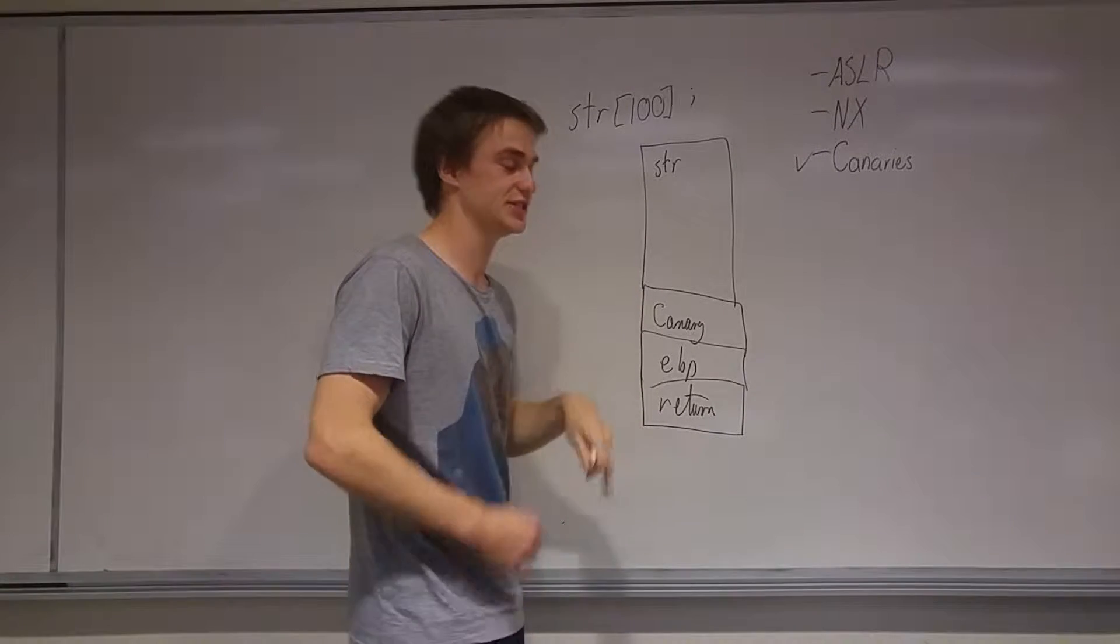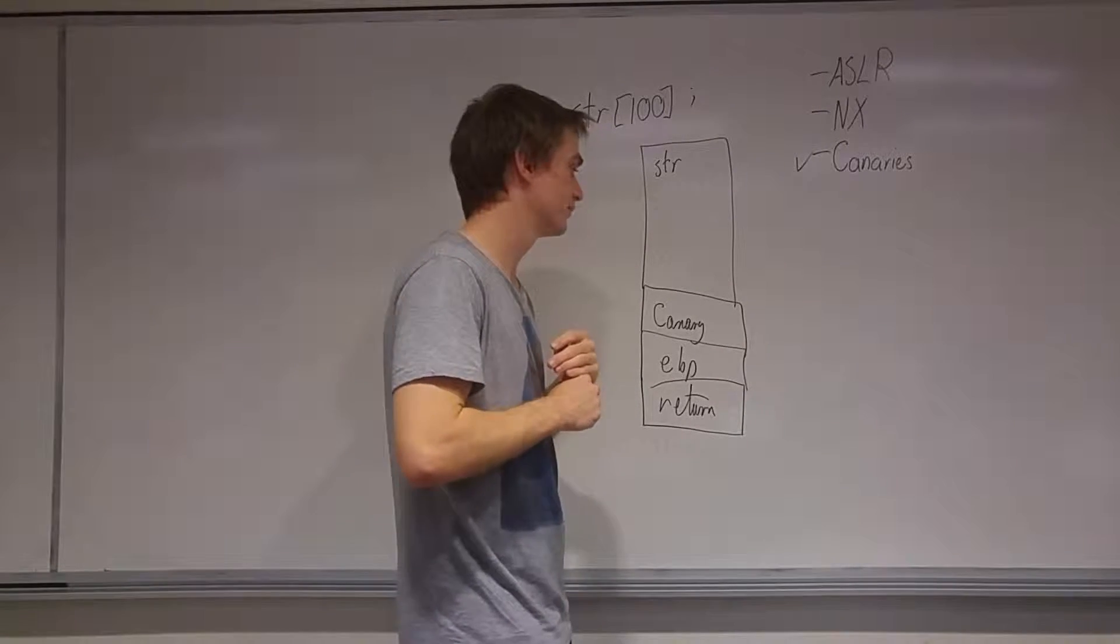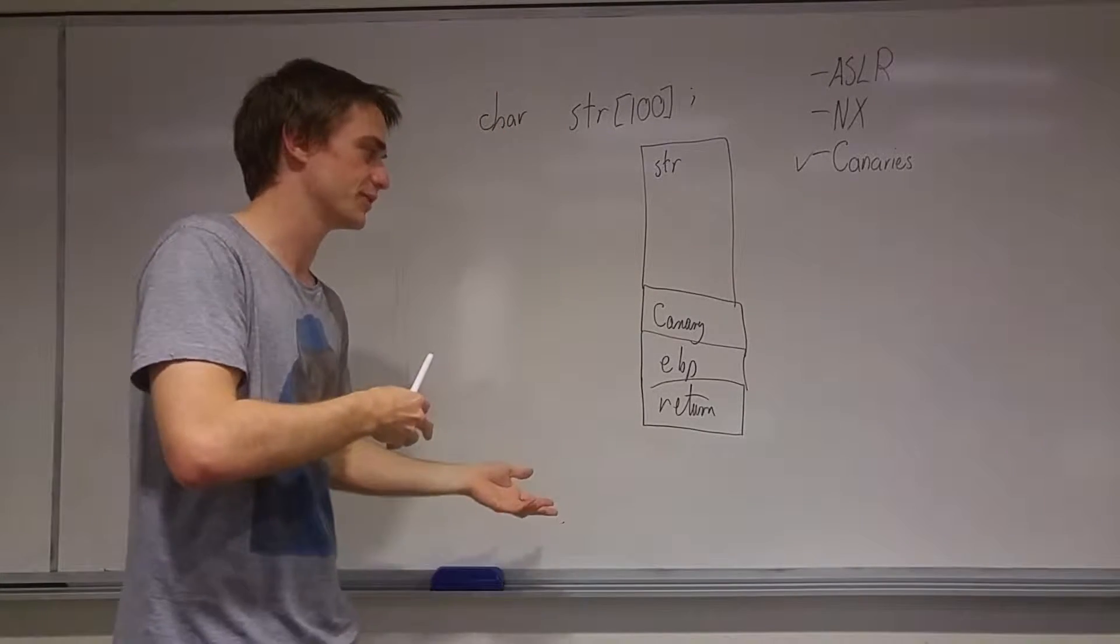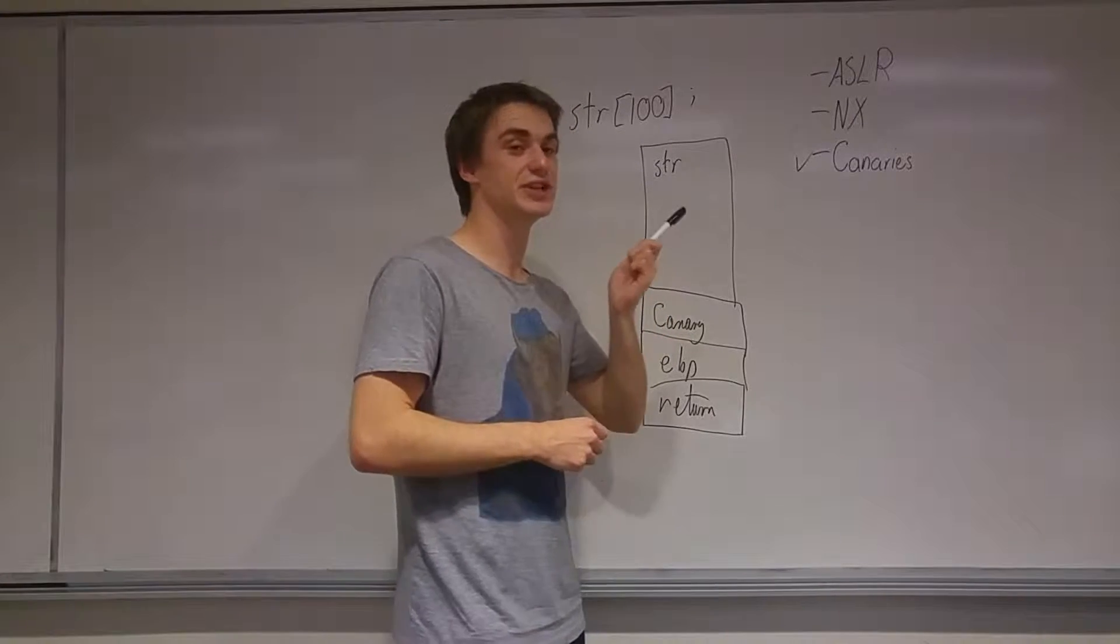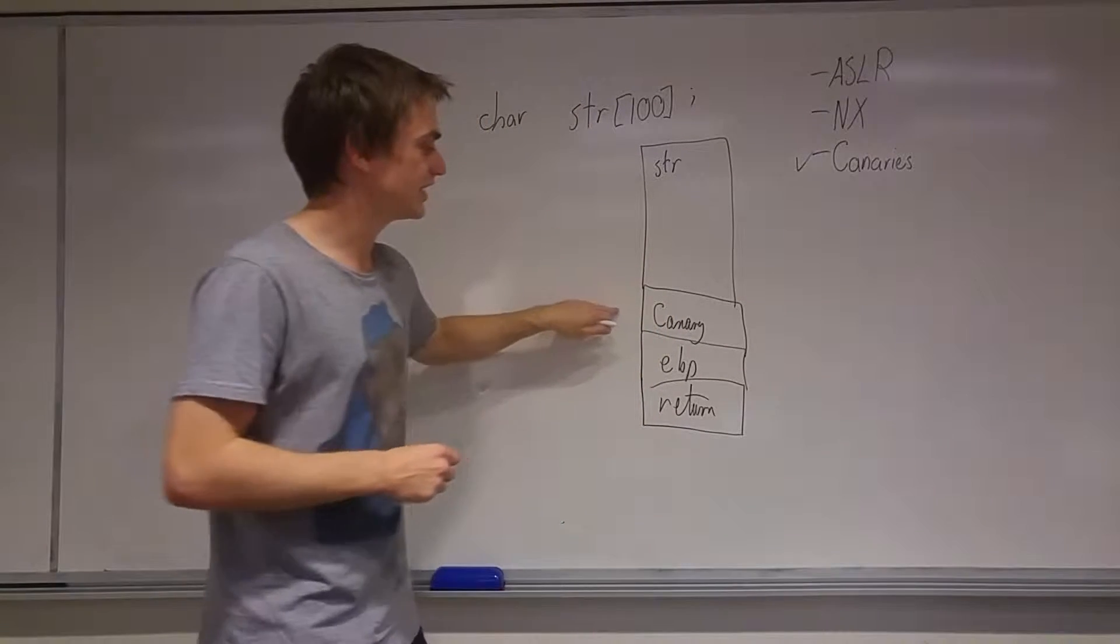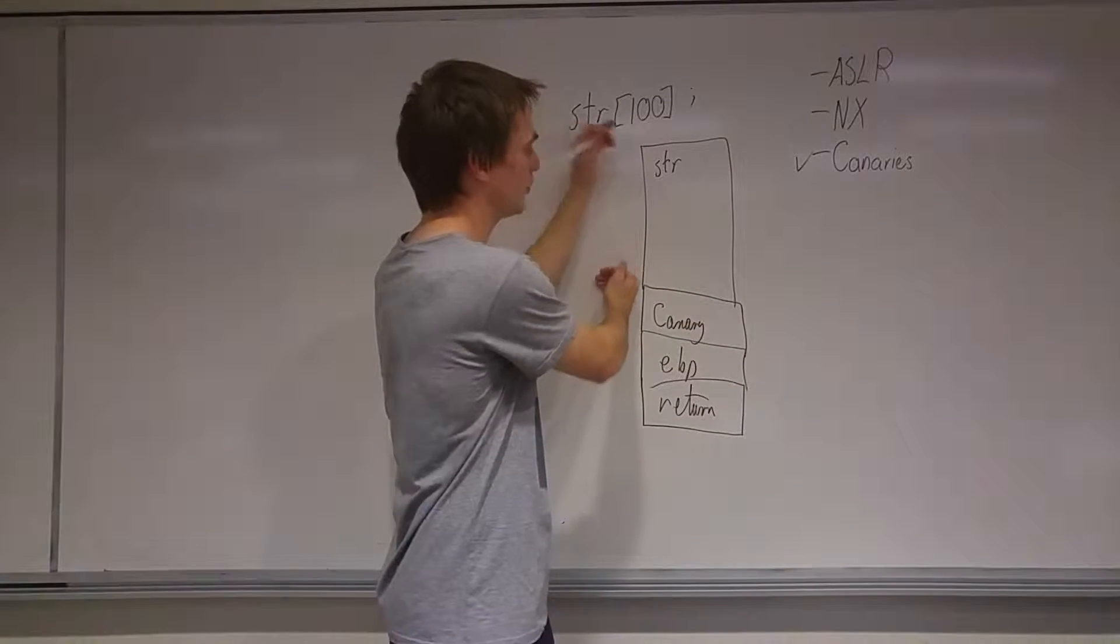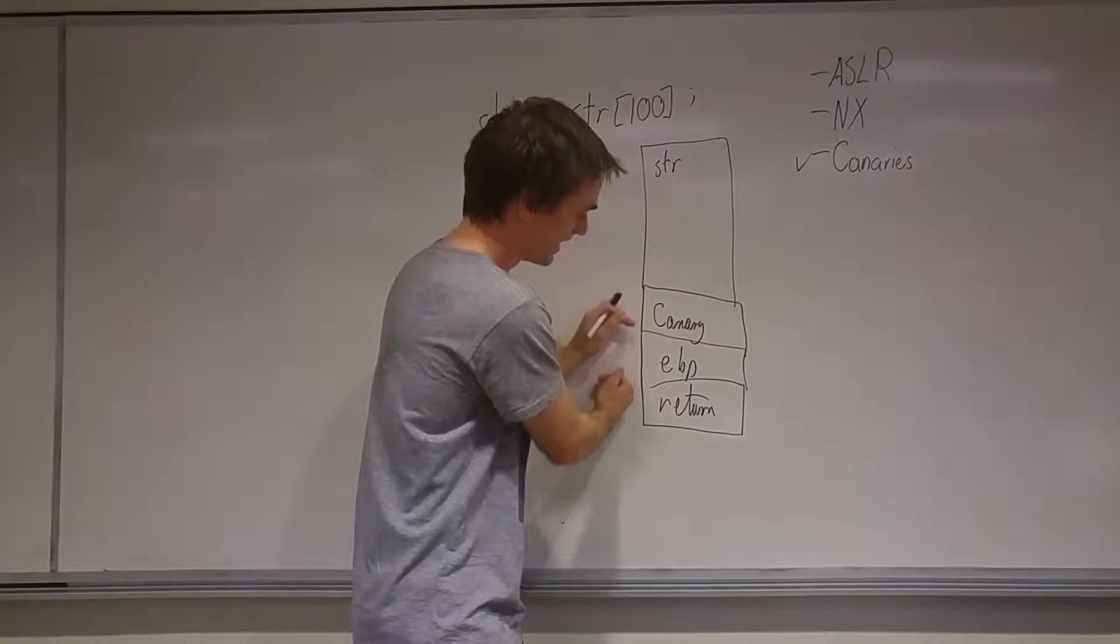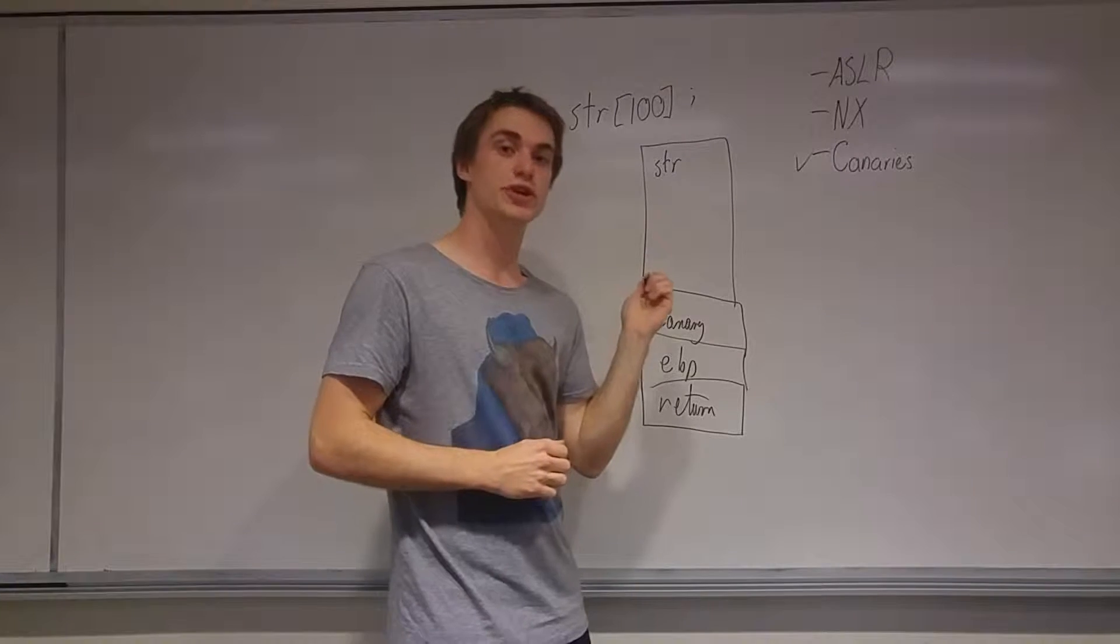There are ways around canaries though. If we find a memory leak in the program, sorry, memory leak probably isn't the best way of saying it, because there's something else called a memory leak. But if there is a way where we can find out what the canary is before we enter in our payload, this effectively allows us to get completely around it because we know what it is. So we can write what we want, the canary value, which is now unchanged, and then we can continue to overwrite everything here.